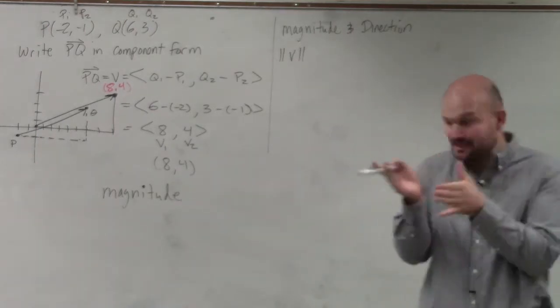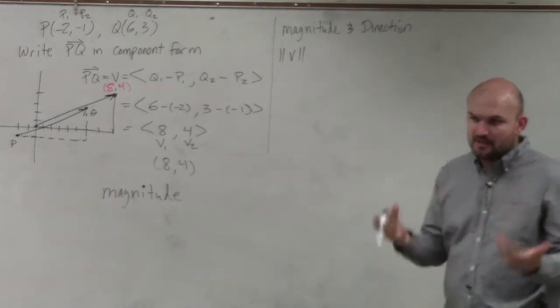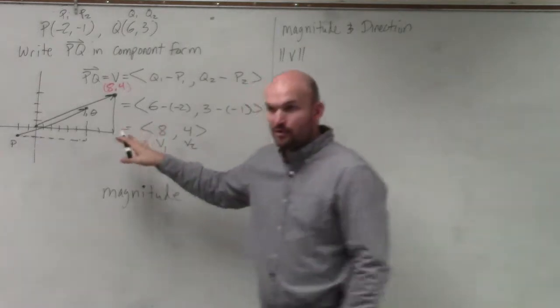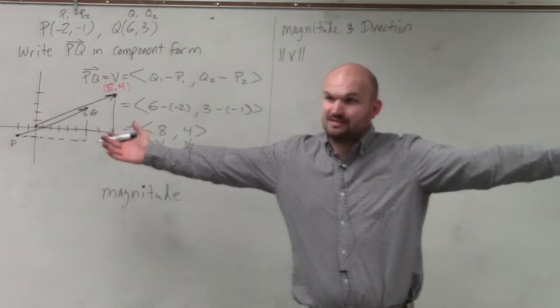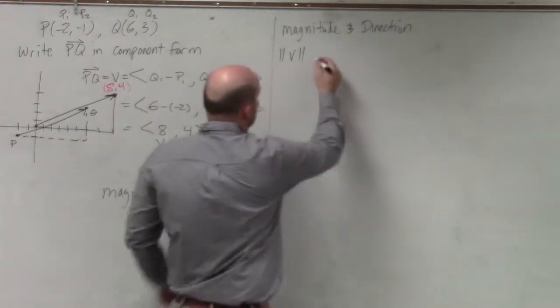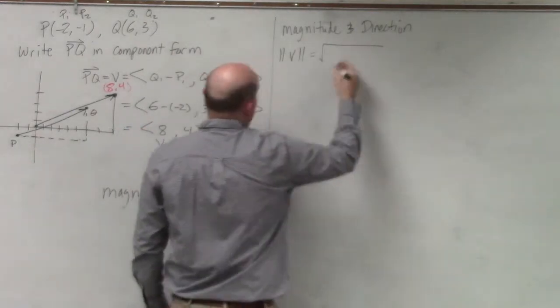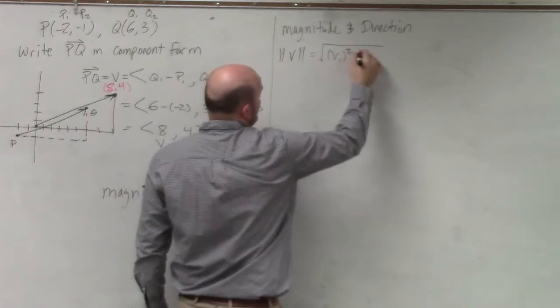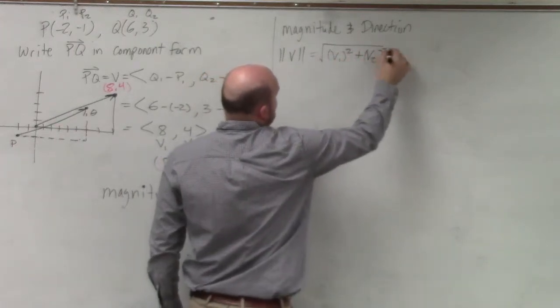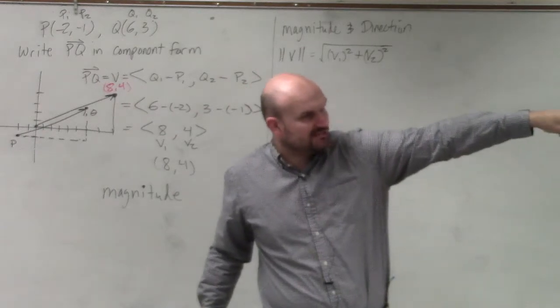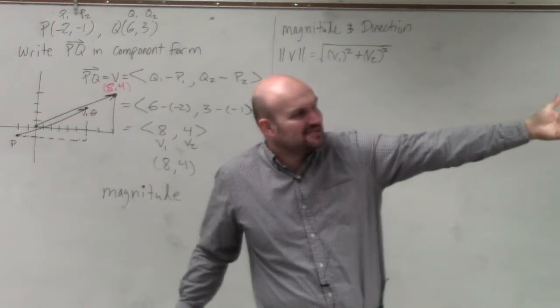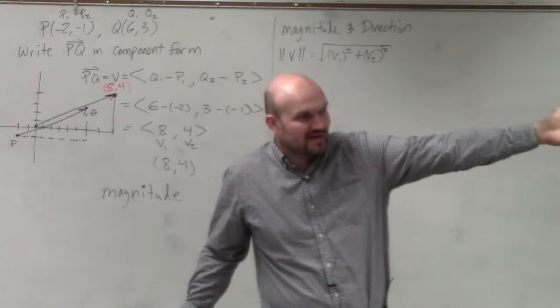The magnitude formula in component form looks like this: do we really need to use the Pythagorean theorem to find distance? No, all we need to do is take the square root of v1² plus v2². Look at the distance formula—it's basically square root of a² plus b², right?